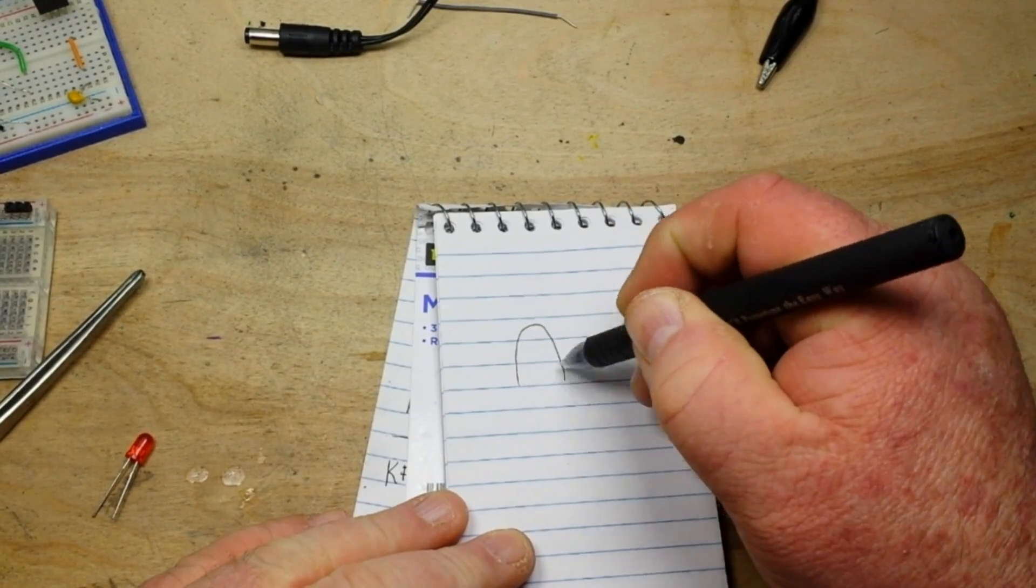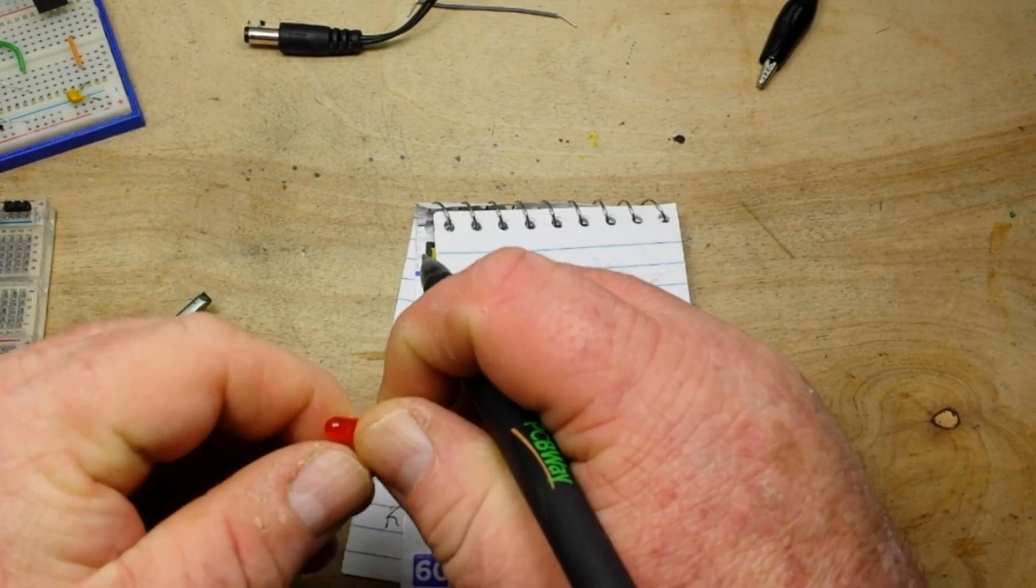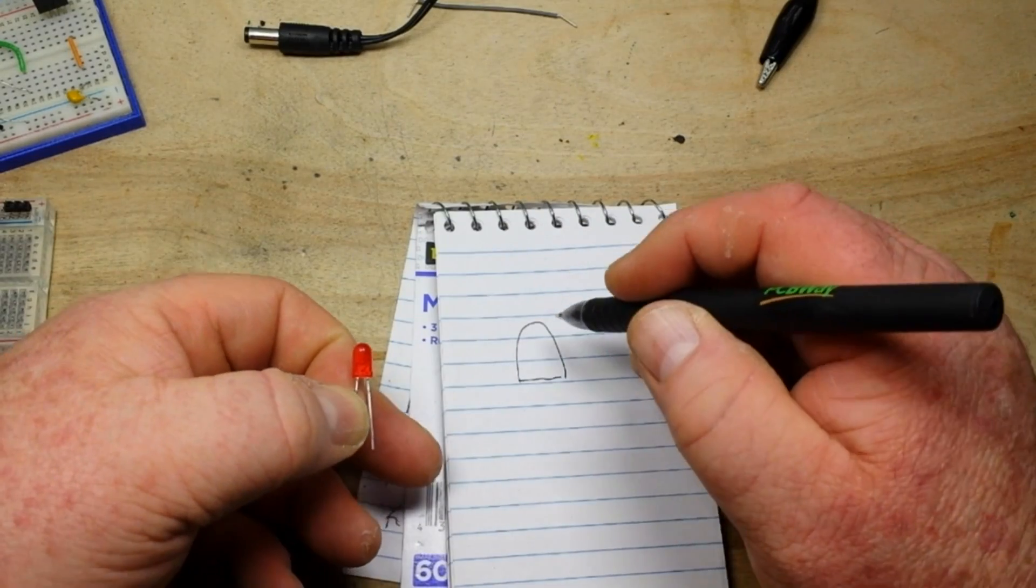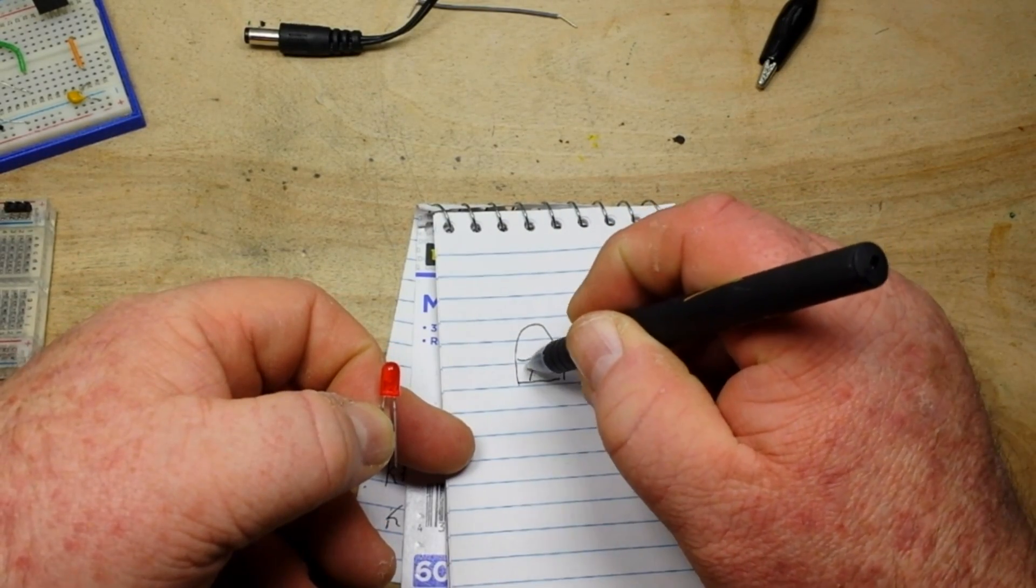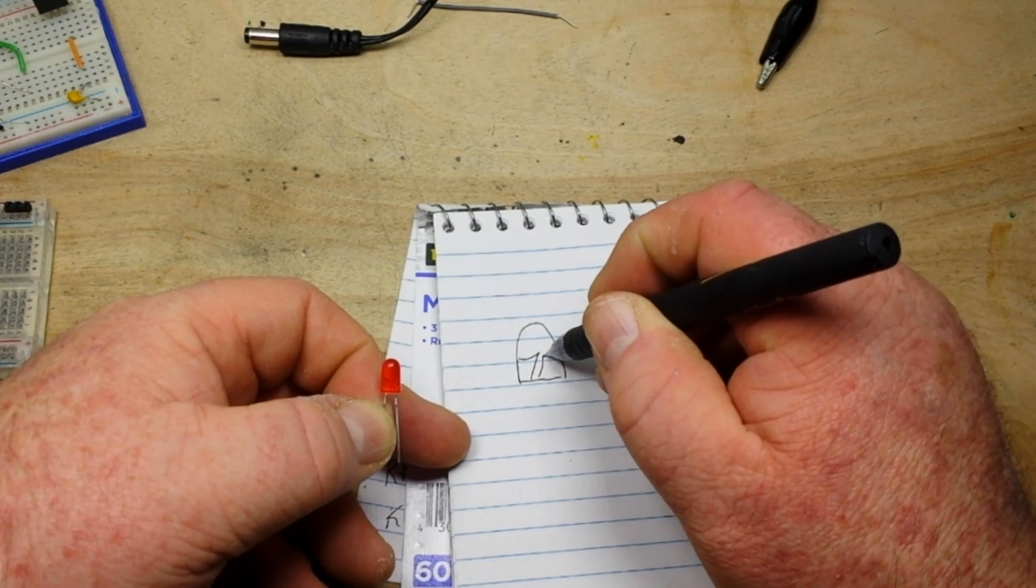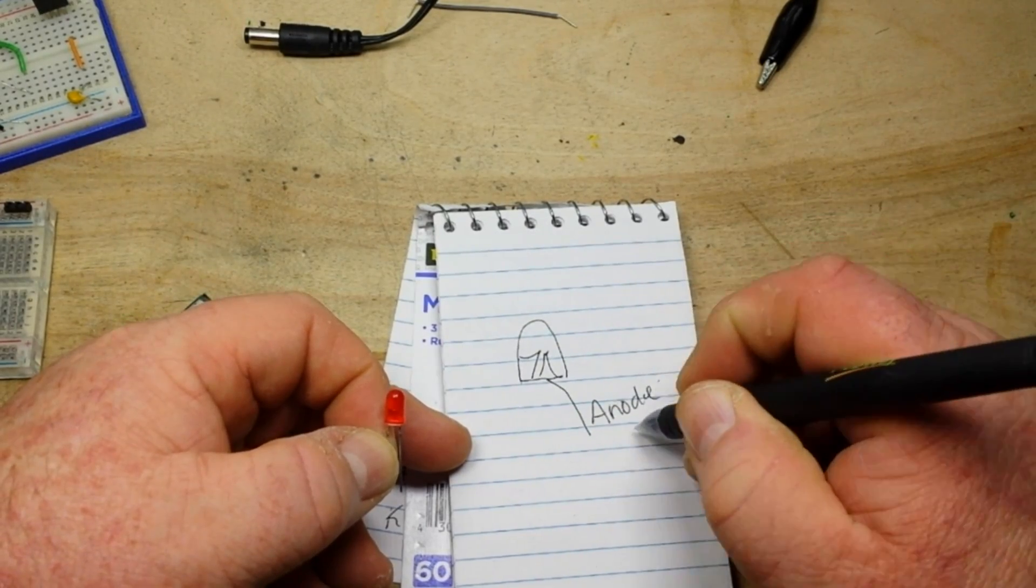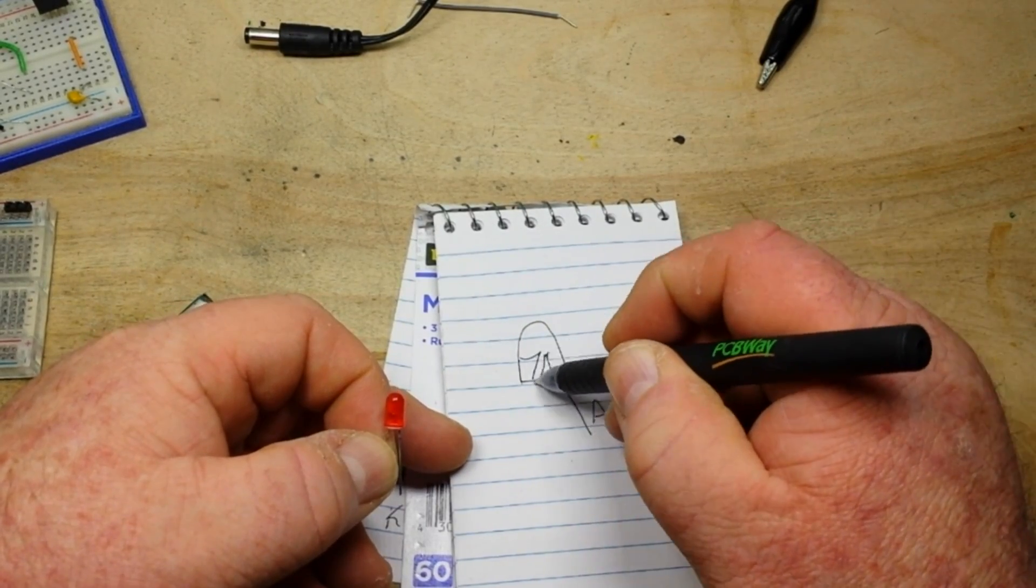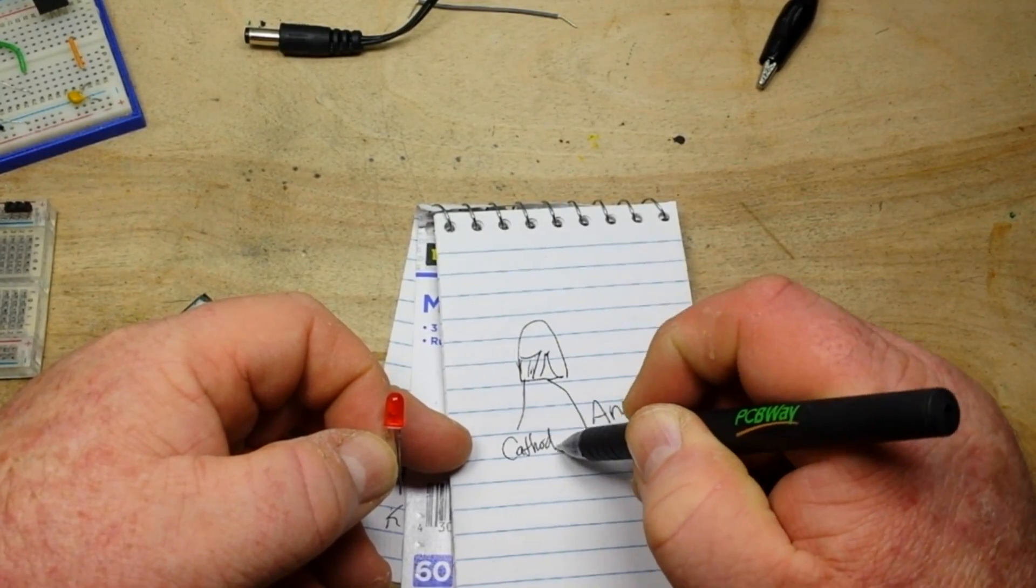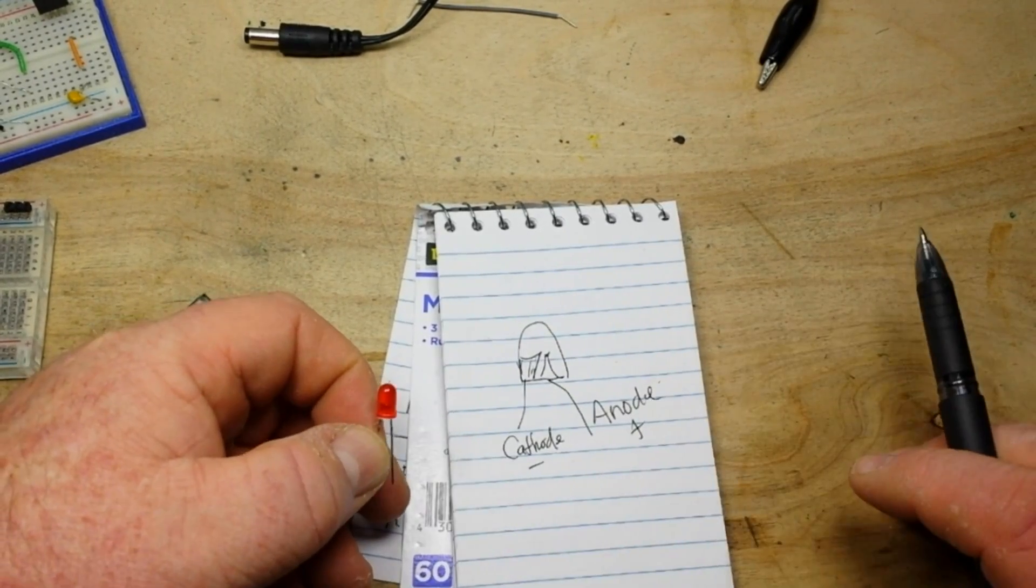If you look kind of through the side of your LED, you will see two pieces. This is your anode, which is the positive. And the big chunky piece, that's the cathode or the negative. So wherever you see the big piece as opposed to the little piece, that's where you need to go.